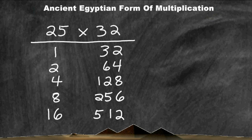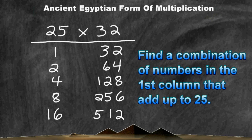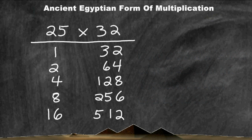The next step is to go back to our first column and locate the numbers that would have a sum equal to the number at the top of our column. So we have to locate numbers with a sum of 25. Sometimes you may have more than two numbers in that column that will add up to the number at the top. The numbers that add up to 25 are 16, 8, and 1.